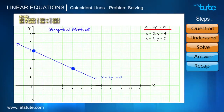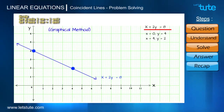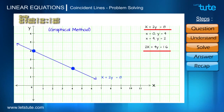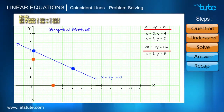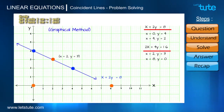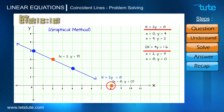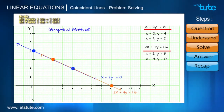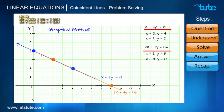Here is the graph. You can see there is already a line for the equation x plus 2y equals 8. We have to draw a line for 2x plus 4y equals 16. The first point is x=2, y=3. The second point is x=8, y=0 — since y is 0, this point lies on the x-axis at 8. Joining these two points, we get the straight line for the equation 2x plus 4y equals 16.